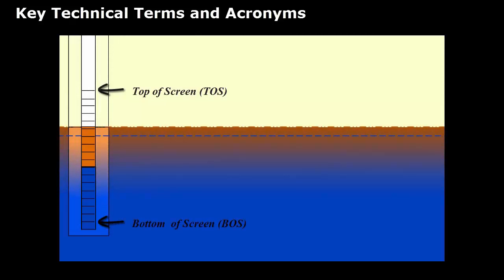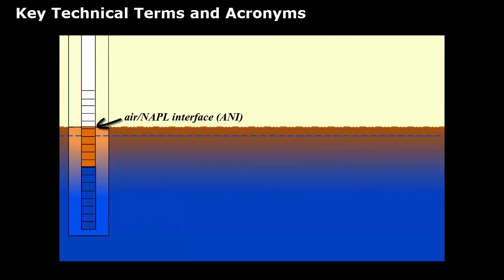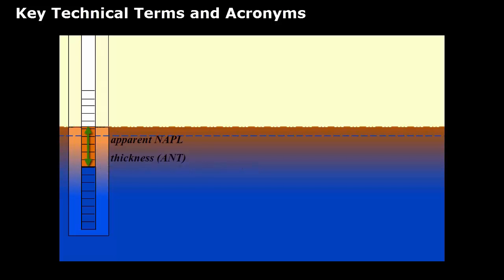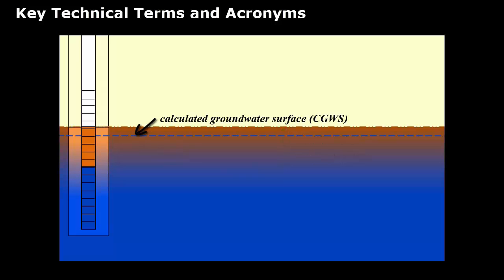Key technical terms and acronyms used include top-of-screen (TOS) and bottom-of-screen (BOS) for the test well; air-NAPL interface (ANI) and NAPL-water interface (NWI) for the top and bottom of NAPL in the well, respectively; apparent NAPL thickness (ANT) gauged in the test well; mobile NAPL interval (MNI), over which LNAPL flows in the formation; and calculated groundwater surface (CGWS), which is the groundwater elevation if LNAPL were not present.